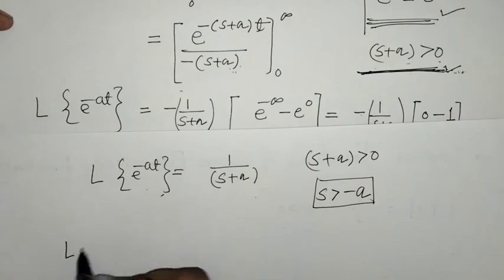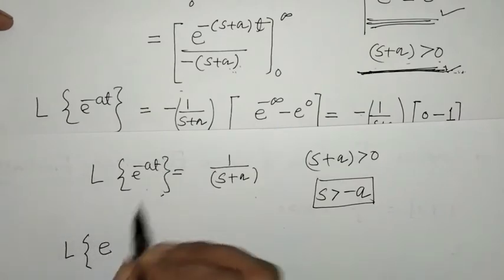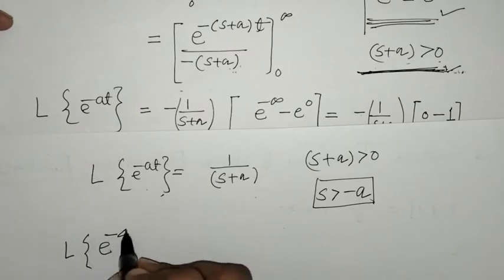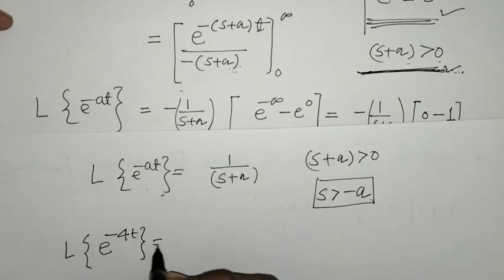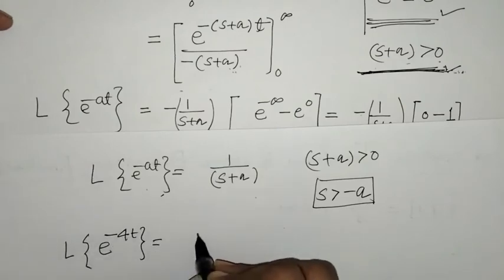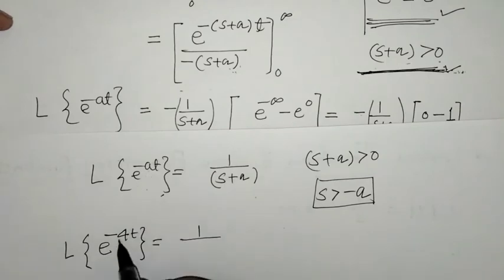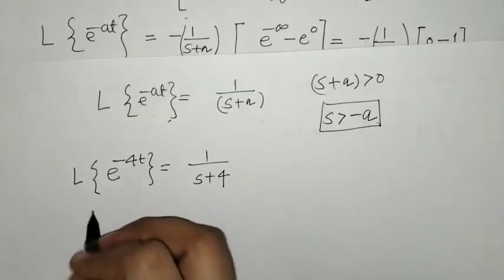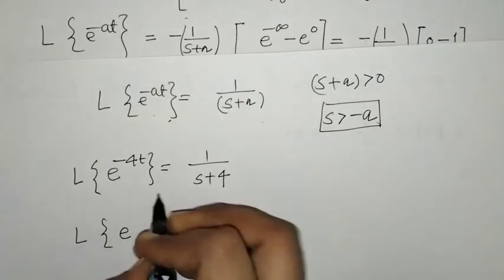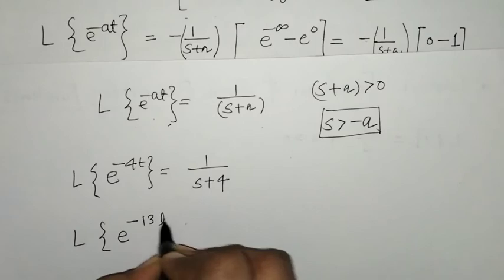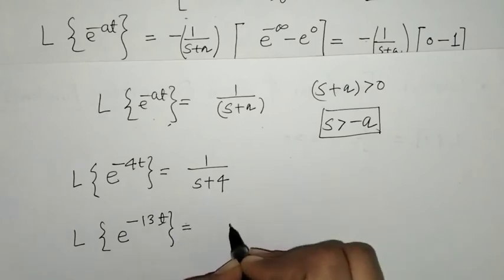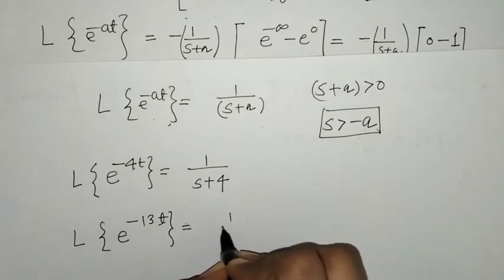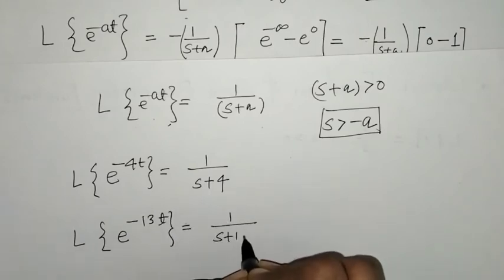Where a is a constant. Using this formula we can find the Laplace of e raised to minus 4t, where a equals 4, giving 1 upon s plus 4. Similarly, if we want the Laplace of e raised to minus 13t, that is 1 upon s plus 13.